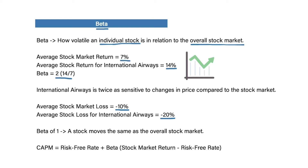If it's a beta of 1, that means the stock would move exactly the same way as the overall stock market. A beta of 2 means that it's twice as sensitive to changes in price. So we have to multiply beta by the risk premium, because each stock is going to have a different level of volatility in comparison to the overall stock market.